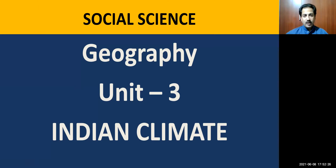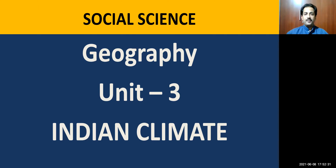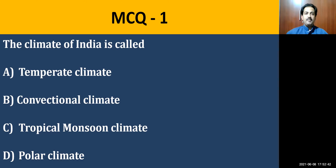Dear students, welcome to Geography Lesson Number Three: Indian Climate. The first question is before you. The climate of India is called — options are four in number: temperate climate, convection climate, conventional climate, tropical monsoon climate, or polar climate.